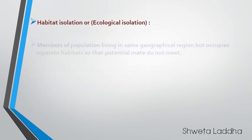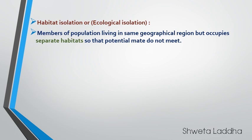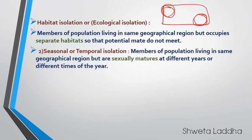First is habitat isolation, also called ecological isolation. Members of a population living in the same geographical area occupy different habitats so that they potentially cannot meet. Suppose there are two groups of frogs living in the same pond but in different corners — their habitats are different so they are not able to mate. Second is temporal or seasonal isolation — their sexually maturing time is different. For example, two fish populations of the same species are maturing at different times, so even though they live in the same region, they cannot mate because they are sexually maturing at different times.